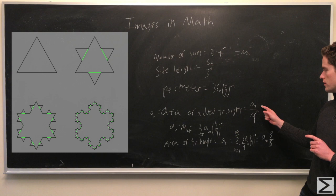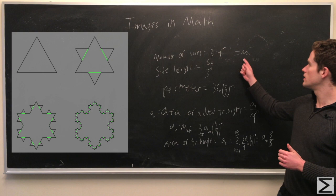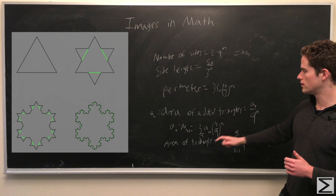And we have the number of these that are added is the same as the number of edges in the previous iteration. So say this is big N, little n is the number of sides we have. So at n minus 1, this is 3 times 4 to the n minus 1.